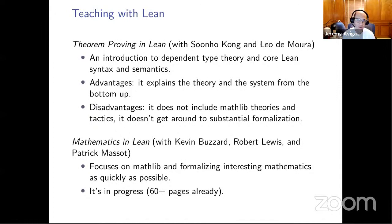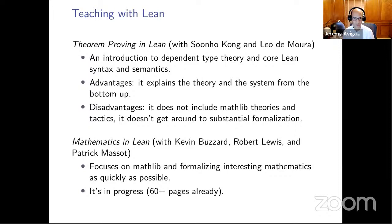On the negative side, it really has very little to do with substantive formalization. It was written well before Mathlib existed and has nothing to do with Mathlib theories and tactics. At the start of the pandemic, Kevin, Rob, and Patrick and I started working on another resource called Mathematics in Lean, which I'm also very fond of. It's still in progress but there are 60 pages there already, and we plan to come back to it this summer. That focuses on using Mathlib and formalizing mathematics as quickly as possible.